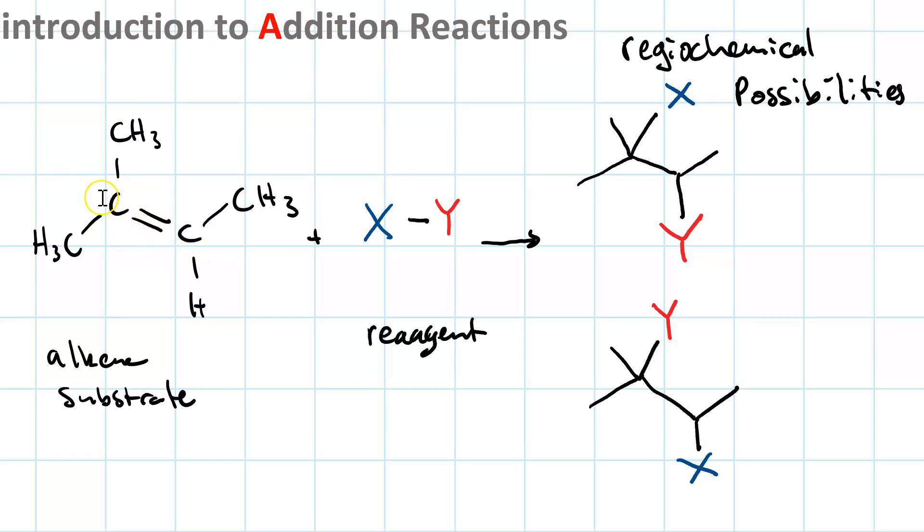So the substrate, the alkene, is planar with every atom involved with these sp2 carbons. This methyl group, this methyl group, and this methyl group, and this hydrogen, and the two sp2 carbons are all in the same plane.